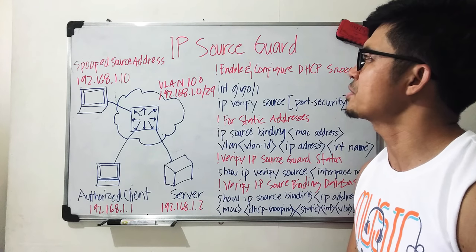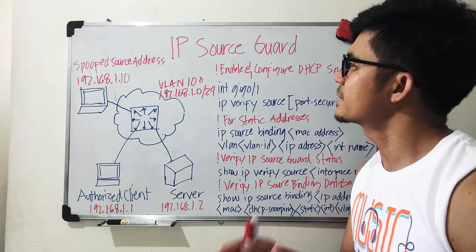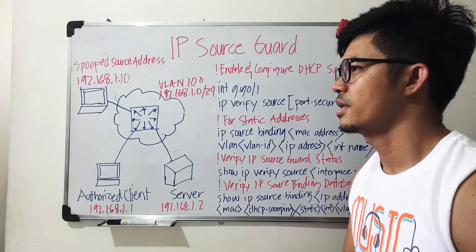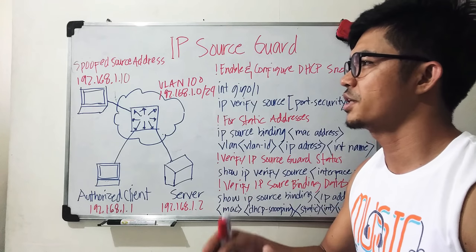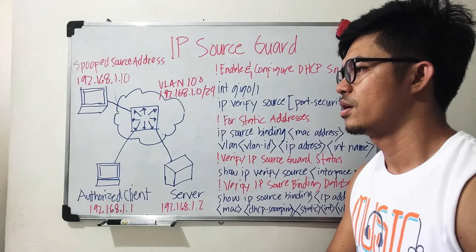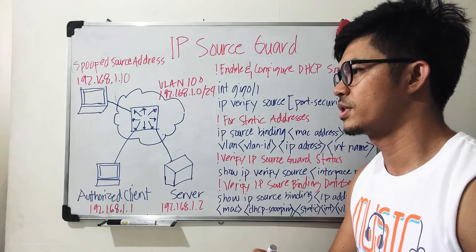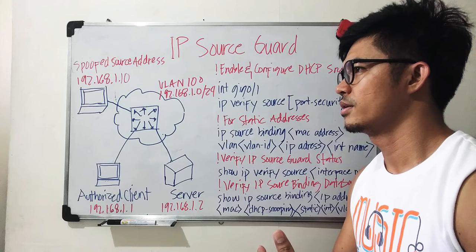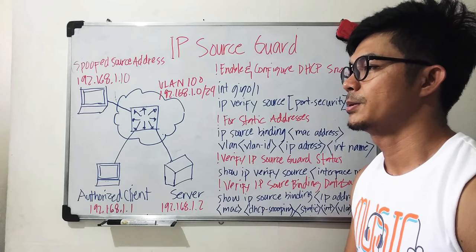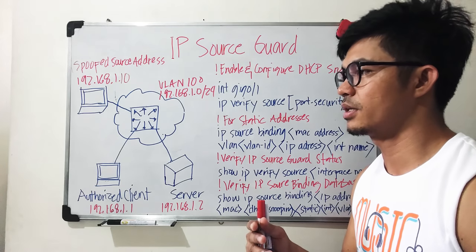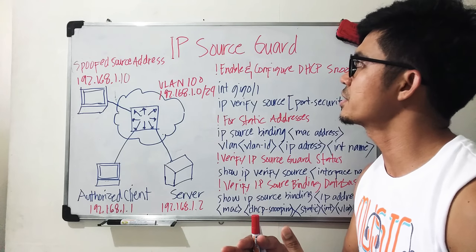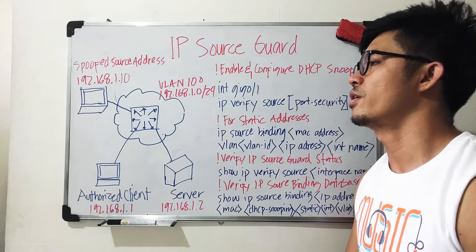So what is IP Source Guard? As the name suggests, it basically guards the source IP — it checks the source IP or the MAC address of a host that is sending traffic to a switch. It is a switch feature that checks incoming traffic, specifically the source IP or source MAC address.